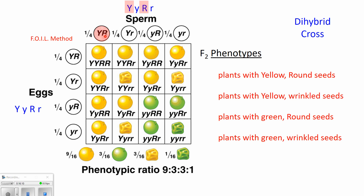Let me focus on one parent at a time — this is the male plant, so these will be the sperm. This plant has two genes for seed color and two genes for seed shape, and every sperm gets one of the two color genes and one of the two shape genes. Using the FOIL method — First, Outer, Inner, Last — "First" means we take the first Y (big Y) and the first R (big R): that's one possible sperm. "Outer" means we take the two letters on the outside: big Y and little r, that's another possible sperm.